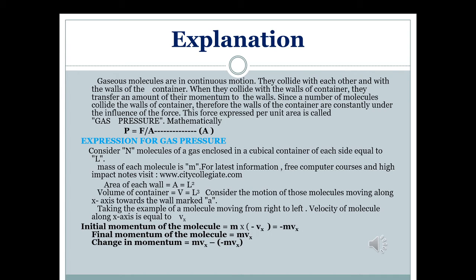For simplicity, if a molecule moves toward a wall of the container along the positive x-axis and hits it, it rebounds back in the negative x-axis direction. We consider an ideal gas filled in a cubic container of side length L, so the volume is L³. The total number N of gas molecules is confined in it. A molecule of mass m moving in the positive x-direction collides with a wall and reverses direction. The product of mass and velocity gives momentum.